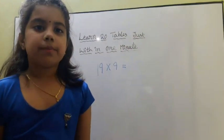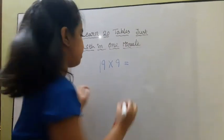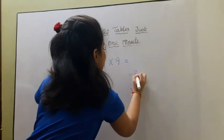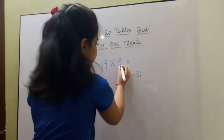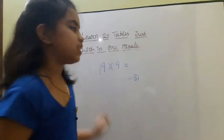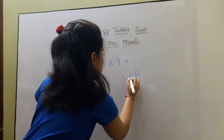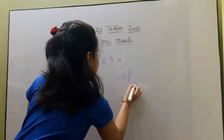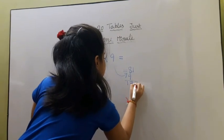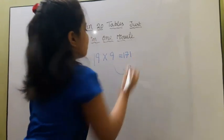First we multiply 9 into 9 is equal to 81. Then we add 9 into 10's place. Now answer is 171.